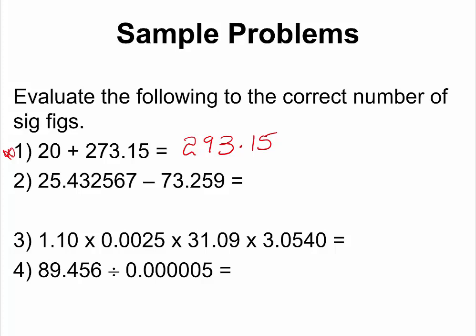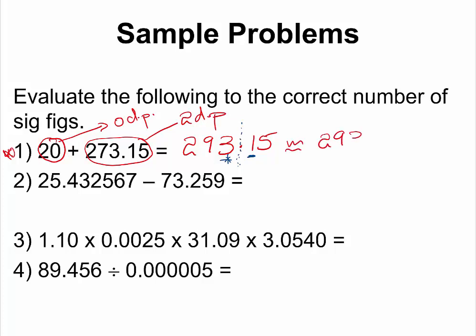The rule for addition of measurements is that we are limited by the measurement with the least number of decimal places. This measurement has zero decimal places, and this measurement has two decimal places, so our final answer should have zero decimal places. Since the number immediately after the last digit is less than five, we simply round down, and the final answer is 293.